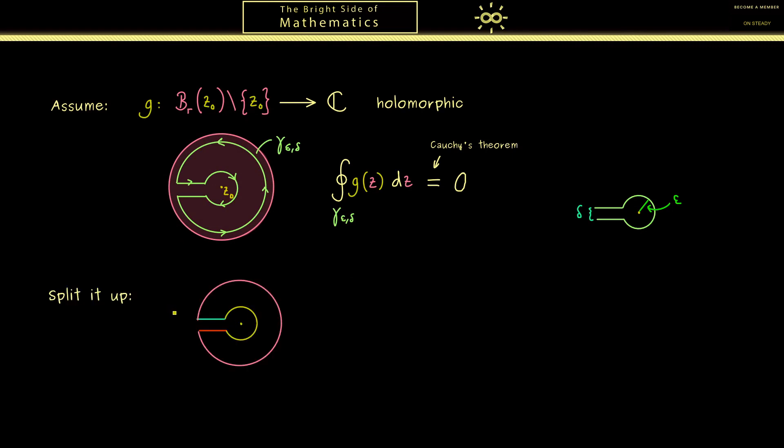I think it's clear how we do it. We take the outer circle, the two lines here, and the inner circle. Then I would say let's give them names where we use upper indices. Hence the outer circle should be gamma 1. Then comes the first line which is gamma 2. Then the inner circle which is gamma 3. And then the last line gamma 4.